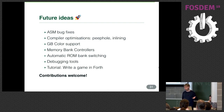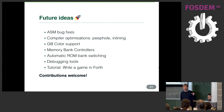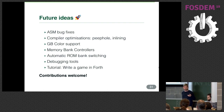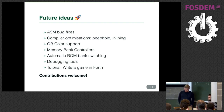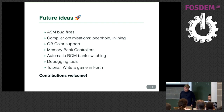Memory bank controllers are another avenue — the cartridge often contains extra hardware managed by a chip, and you write to ROM addresses to access it. There are rumble cartridges, a camera cartridge, and features like ROM bank switching where you can't access the entire ROM simultaneously in certain cartridges. More debugging tools are also needed. We still need to write a tutorial on how to write a Forth game from scratch — contributions are welcome.